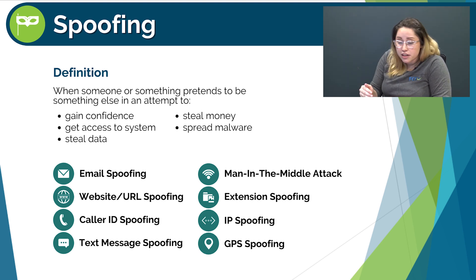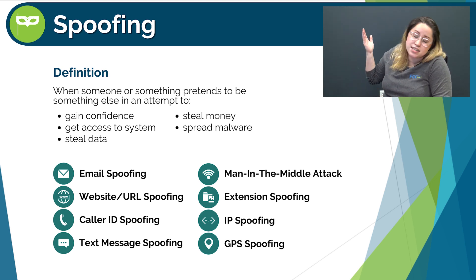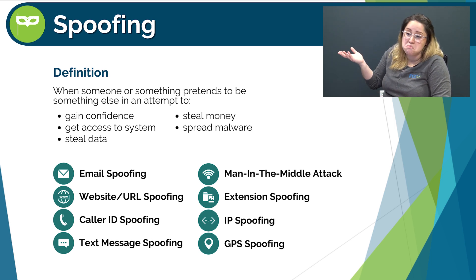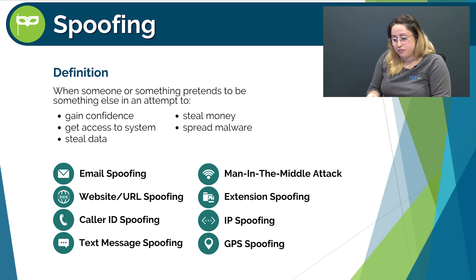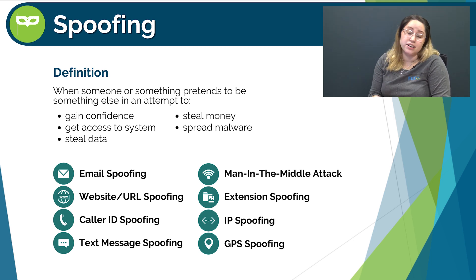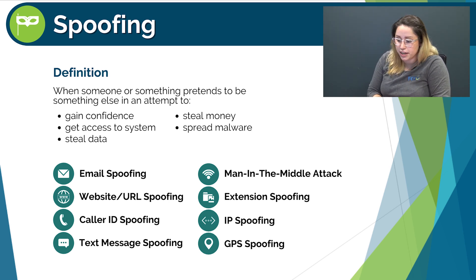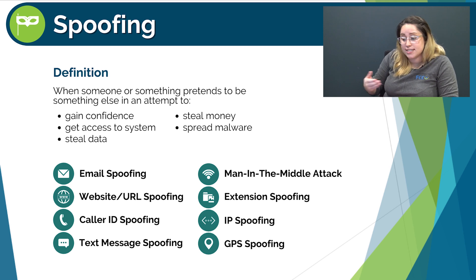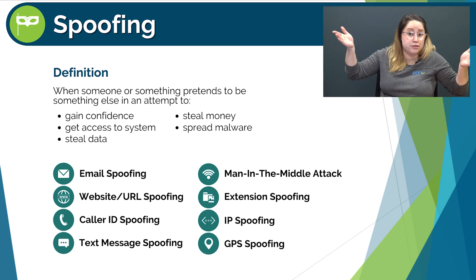Caller ID spoofing is when a caller deliberately falsifies the information transmitted to your caller ID display to disguise their identity. I often get calls from my area code but when I pick up, the person on the other line doesn't sound like they're from southeastern Wisconsin. Text message spoofing is very similar — someone deliberately falsifies the information transmitted to your sender ID display to disguise their identity. A man-in-the-middle attack is where an attacker secretly relays and possibly alters the communication between two parties who believe they're in direct communication with each other. A common example is when an attacker manipulates an unencrypted Wi-Fi access point and inserts themselves in between you and, for example, the Starbucks Wi-Fi.